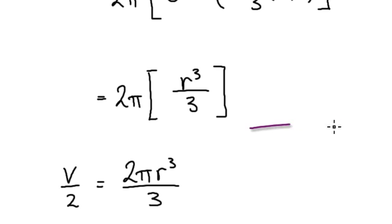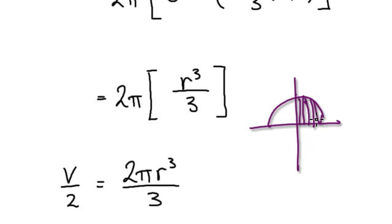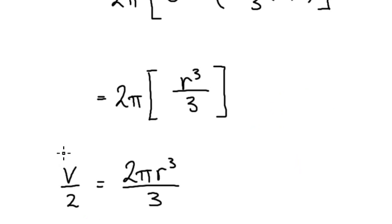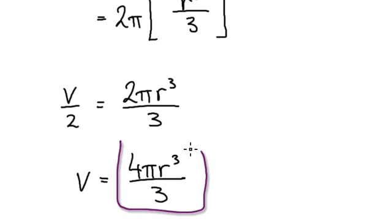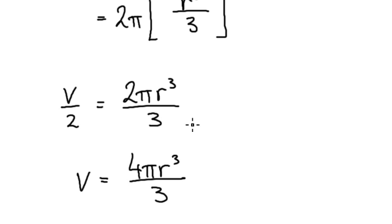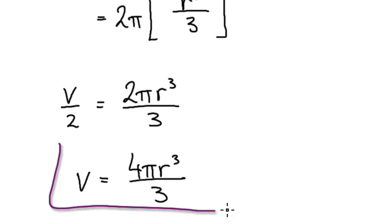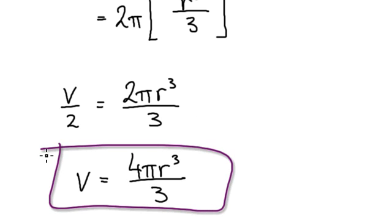It was half of a sphere all along, so now the whole sphere would be found by multiplying both sides by two. That will then give you this. So the volume of a sphere, by summing up all the cylinders, gives you the standard formula, which is consistent with the formula of a sphere.